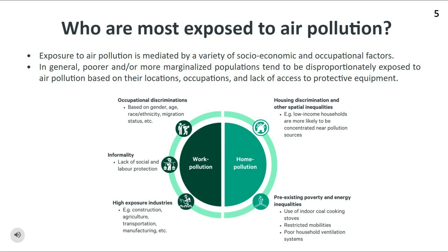Furthermore, poor and/or racially and ethnically marginalized populations are more likely to be concentrated near pollution sources due to a lack of choice and other systemic discriminations, such as occupational or housing discrimination. In addition, pre-existing poverty, gender, and energy inequities can lead to high levels of prolonged exposure of certain groups of women to household pollutants, such as from indoor cooking stoves.